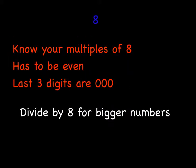And it's pretty much the same rule for eight. Know your multiples of eight, divide by eight if you don't, but beyond that, for any number, it has to be even, which isn't always true for seven. And the last three digits, if they end in zero, then your number has eight as a factor.